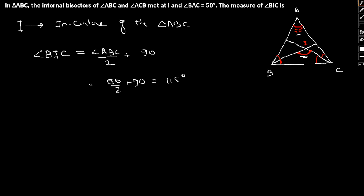So here what we have is that 50 by 2 plus 90, that is 115 degrees. So I hope this is clear. This is simply a property of incenter that we have used to solve this particular question. Now let's take a look at the third question.